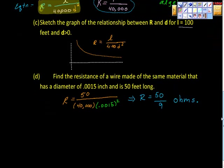So moving on finally, it says, find the resistance of the wire made of the same material that has a diameter of, tens, hundreds, thousands, ten thousands. So 15 ten thousandths of an inch. And it has a length of 50 feet.